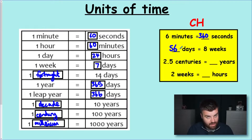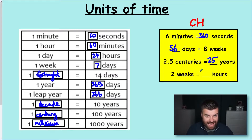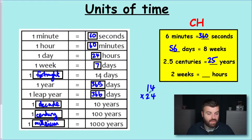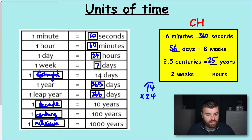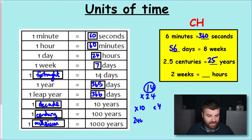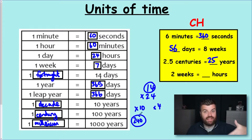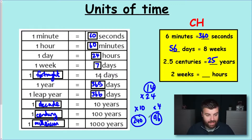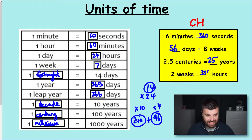Twenty-five years is two and a half centuries. Two weeks is how many hours? You had to realize that it was 14 days and multiply 14 by 24. Here's a quick mental method: instead of multiplying by 14, multiply by 10 and then by 4 and add them together. So 24 times 10 is 240, and 24 times 4 — double 24 is 48, double again is 96 — then 240 plus 96 gives us 336 hours.